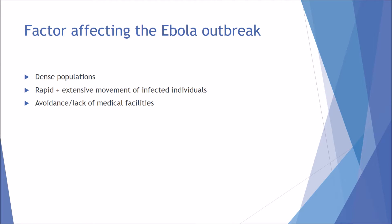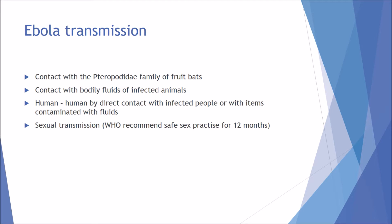Several factors affected the Ebola outbreak. Living in a dense population means closer proximity to others, making it more likely to pass on bodily fluids and infection. Rapid and extensive movement of infected individuals also played a role — people holding hands while travelling long distances to trade or gather resources, spreading the infection to other villages. Additionally, avoidance of medical facilities was a key factor: some people refused treatment because of strong family bonds, not realising that professional medical care is essential for such a deadly infection. The main reservoir is the Pteropodidae family of fruit bats.